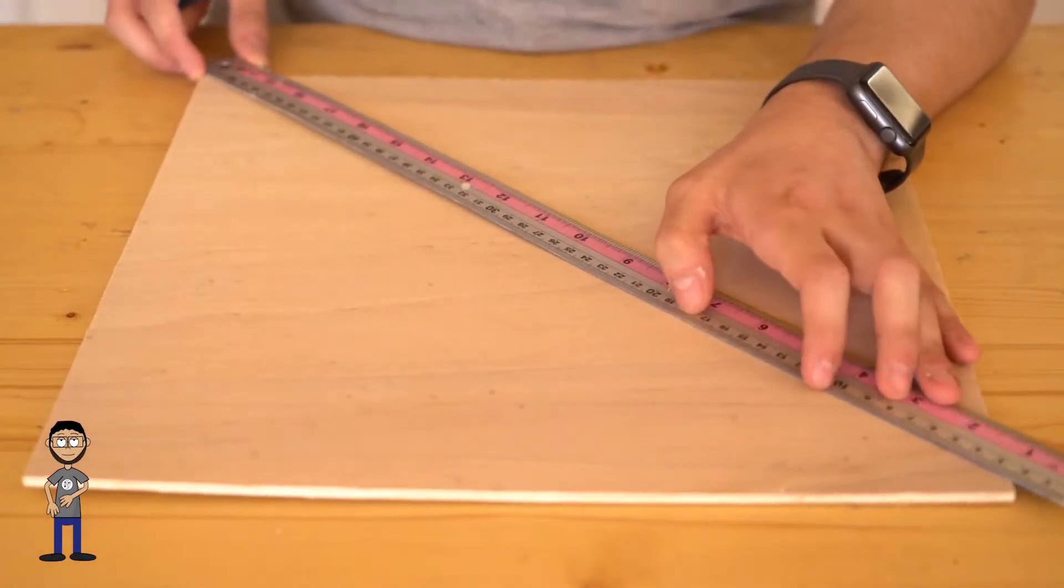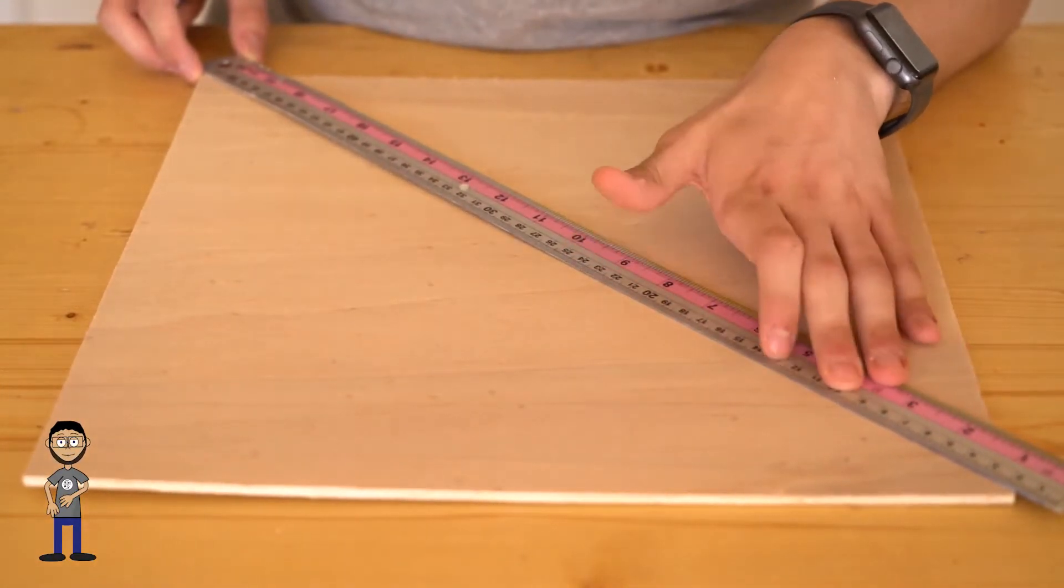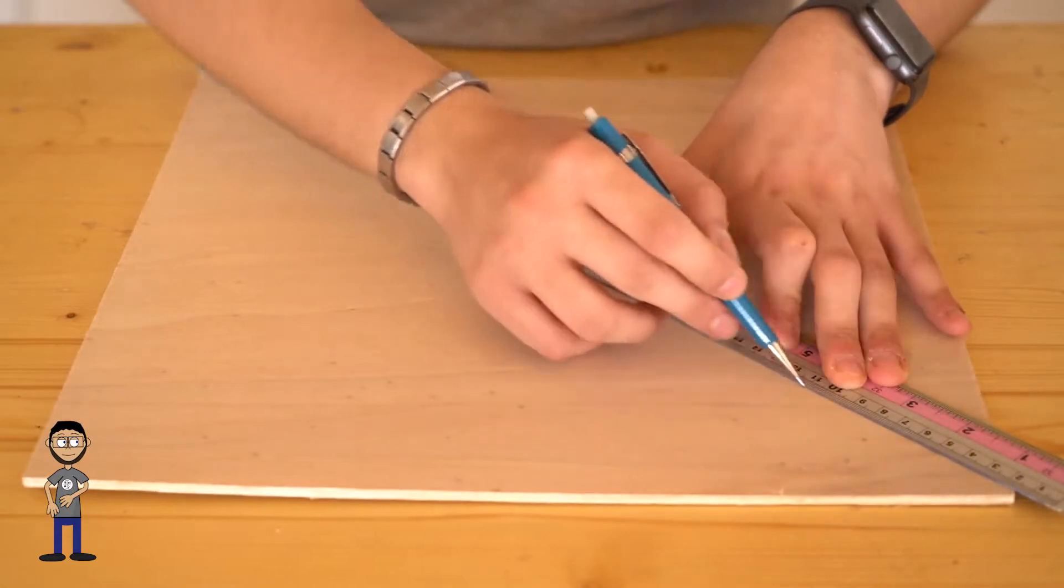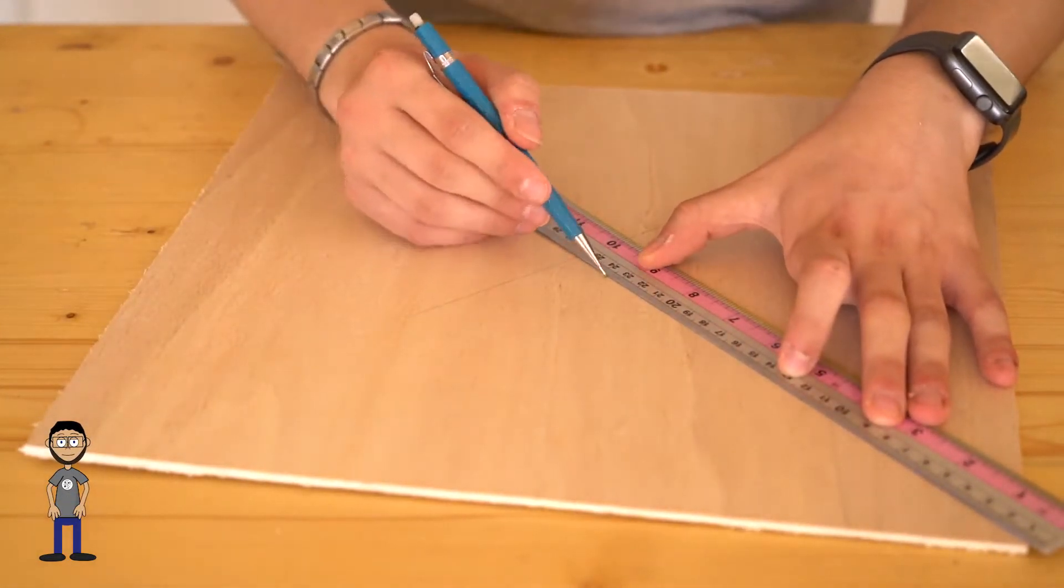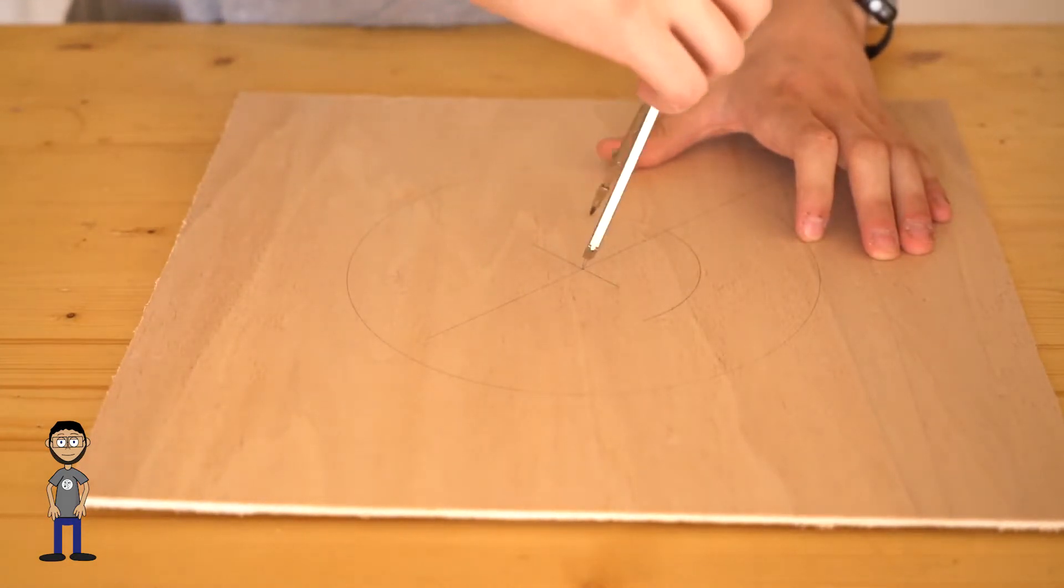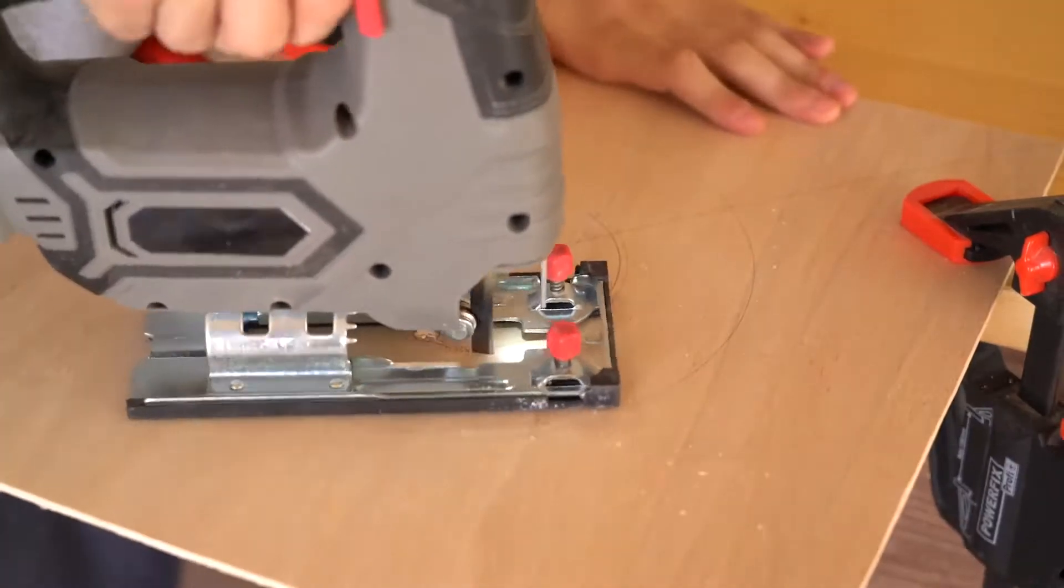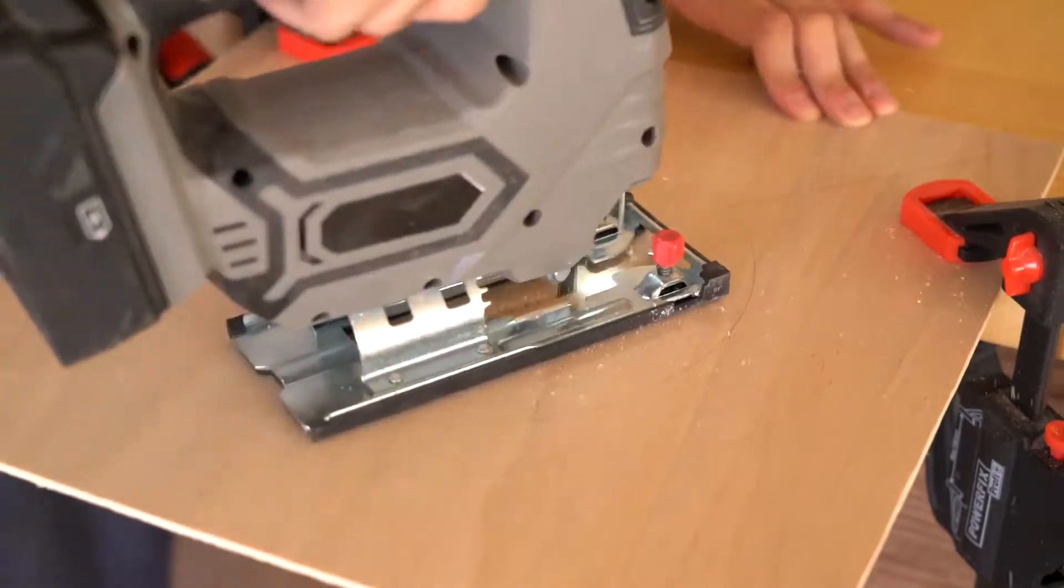I marked the middle and traced with a compass the hole for the hose that I'm going to use. I cut the hole with the jigsaw.